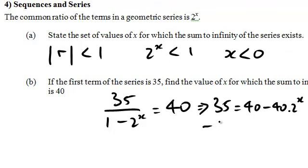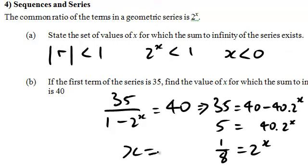Instead we need to subtract 40 from both sides. Then we can ignore that minus sign. And now you could take logs of both sides if you wanted to. Although you don't need to because it works out rather nicely. That this 8 is clearly a power of 2. And so x is equal to minus 3 is the answer.